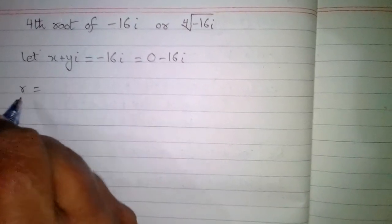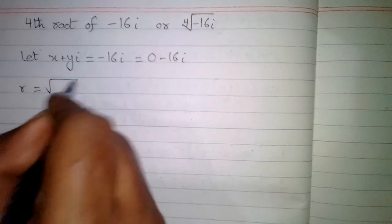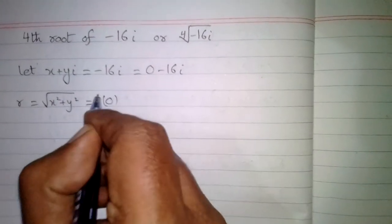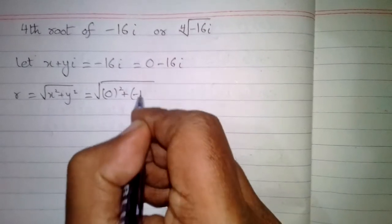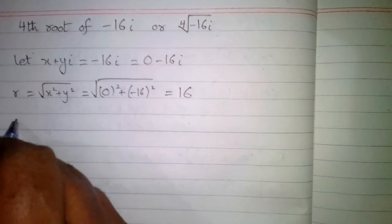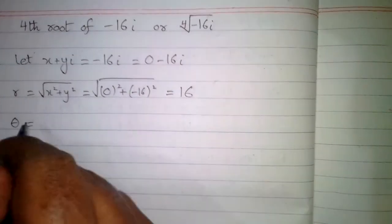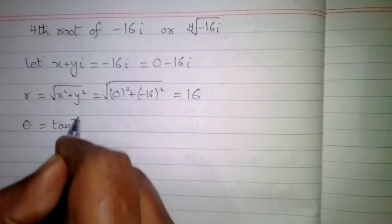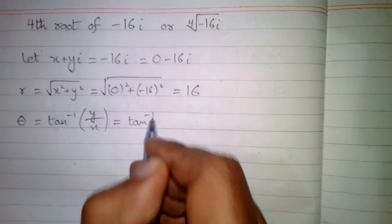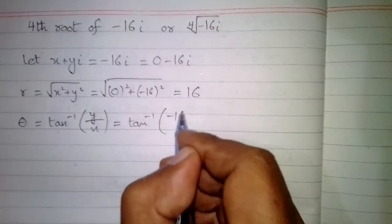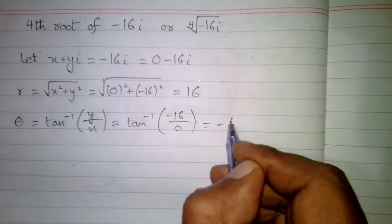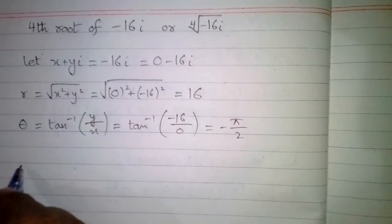We will find the modulus and argument of this complex number. The modulus r is equal to the square root of x² plus y², which equals the square root of 0² plus (−16)², giving r equal to 16. The argument theta equals tan inverse of y upon x, which is tan inverse of minus 16 upon 0, giving theta equal to minus pi by 2.